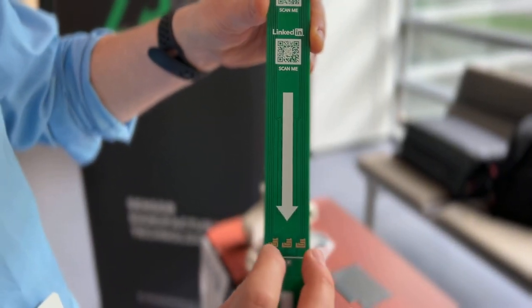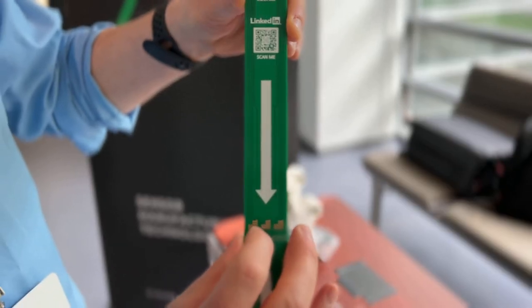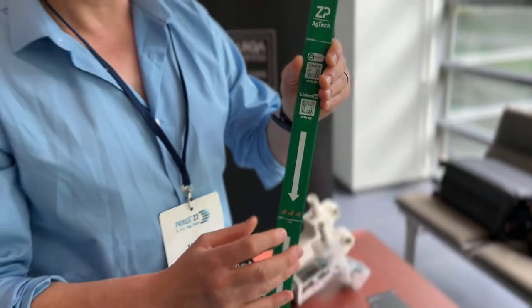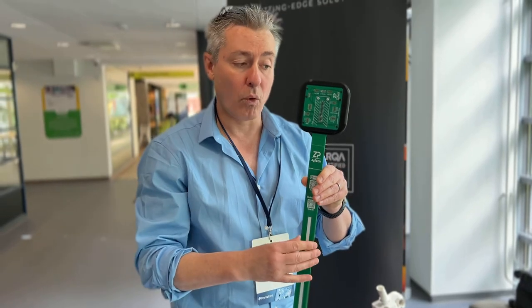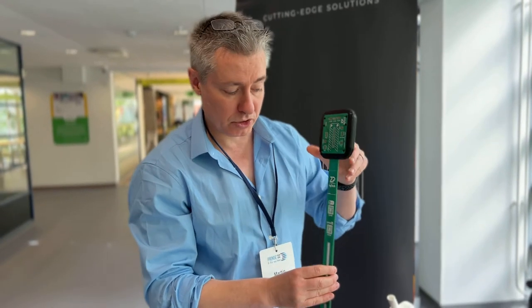What this is is a nitrate rod for measuring nitrate in the soil. This is planted to a depth and then the nitrate sensors are in the soil constantly measuring the nitrate.